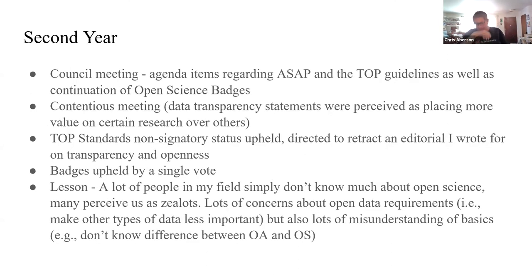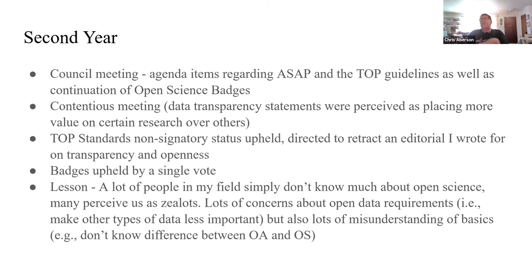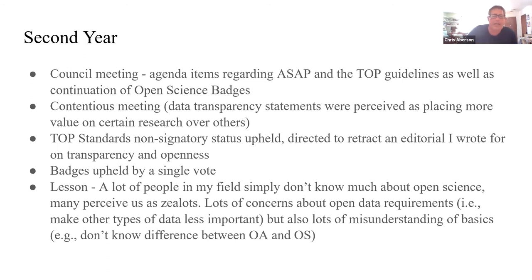In the second year, things came to a head at the council meeting where we had agenda items regarding TOP status for the journal, and also whether I would be allowed to continue open science badges, which had just recently begun. It was a very contentious meeting. A lot of issues around data transparency statements — people made points that articles saying data were available would be seen as more important than those that don't, even though there are very good reasons for not having data available.